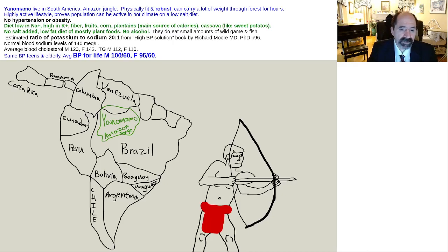They're very physically fit and robust. They're able to carry heavy weights through the forest and jungles for many hours. And they eat an extremely low sodium diet. They have about the lowest dietary excretion of sodium in their urine, about 1 milliequivalent in 24 hours, of any population that's ever been studied.